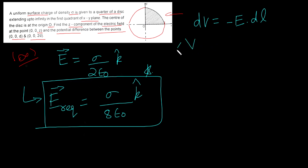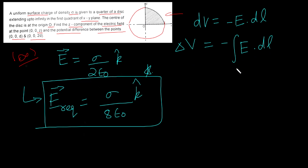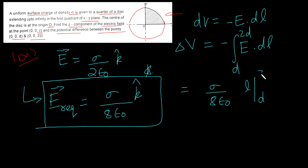Here we write delta V for the potential difference. When there is a potential at infinity, the potential at infinity is zero and we write V directly. But here we write delta V because we need to find the potential difference between these two finite points — (0,0,d) and (0,0,2d) — they are not at infinity. So here sigma by 8 epsilon naught, and if you integrate dl you get l, with lower limit d and upper limit 2d.